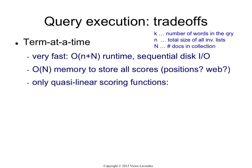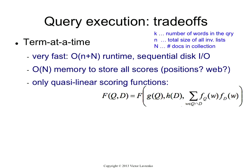Another downside is this is only amenable to certain types of scoring functions. You can only use term-at-a-time if your scoring function has roughly the following form. So Q is the query, D is the document, F is the scoring function.